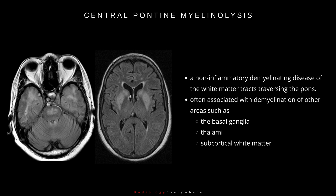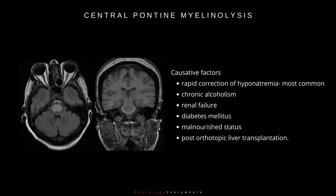It is often associated with demyelination of other areas such as the basal ganglia, thalami, and subcortical white matter. This most commonly occurs with the rapid correction of hyponatremia. Other causes include renal failure, diabetes mellitus, malnourished status, and post orthotopic liver transplantation.